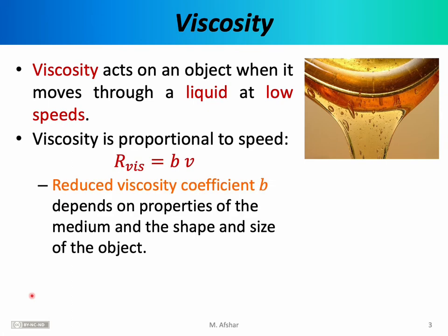Viscosity is proportional to speed. More precisely, the resistive force of viscosity is equal to b times V, where V is the speed of the object moving through the liquid, and b is the reduced viscosity coefficient — a number that depends on the properties of the medium and the shape and size of the object.